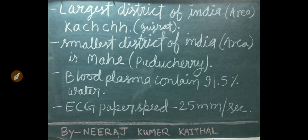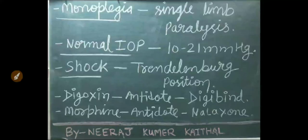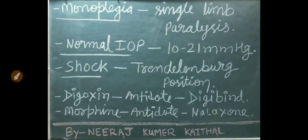Largest district of India according to area is Kachchh, Gujarat. Smallest district of India according to area is Mahe, Pondicherry. Blood plasma contains 91.5 percent water. ECG paper speed is 25 mm per second. Monoplegia is paralysis of a single limb. Normal intraocular pressure is 10 to 21 mmHg.